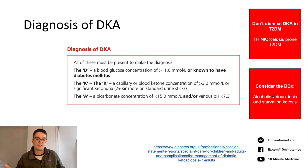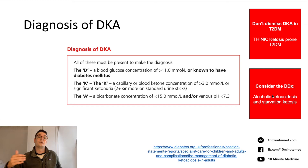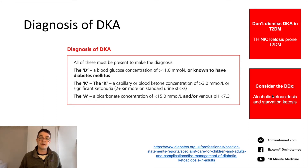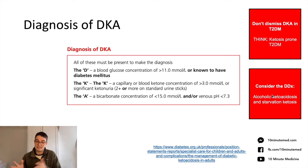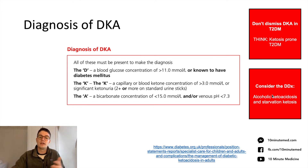Quite often on the wards you'll be asked to assess a patient with high capillary blood glucose — say a glucose of 14. The next question you'd ask the nurse is to do ketones. If the ketones are raised and the glucose is raised, you'll need to do a gas to see if they fit the DKA criteria. Getting a VBG is quite good — the correlation between VBGs and ABGs is about 0.035 pH units, so you don't necessarily need an arterial blood gas unless the patient is hypoxic.